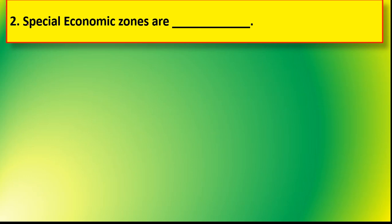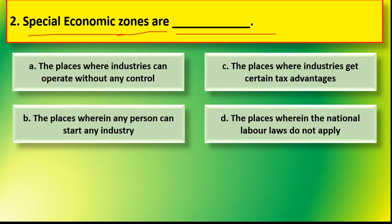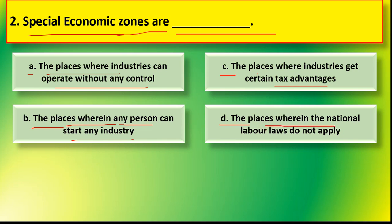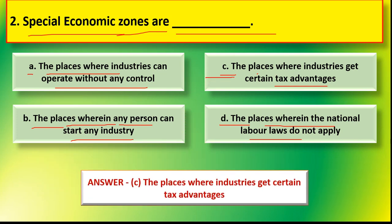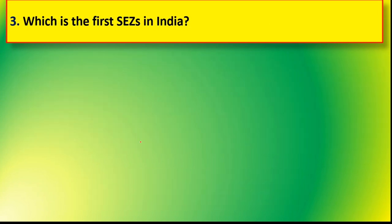Next question number 2: Special economic zones are dash. Options are: option A the place where industries can operate without any control, option B places wherein any person can start any industry, option C the place where industries get certain tax advantages, and option D the place wherein the national labor laws do not apply. The correct answer is option C — special economic zones are the places where industries get certain tax advantages.